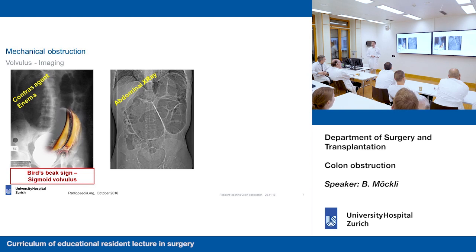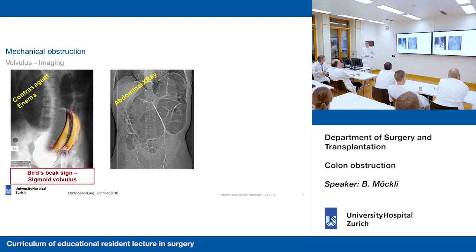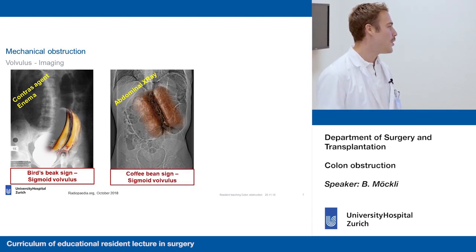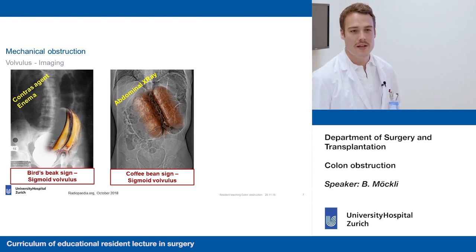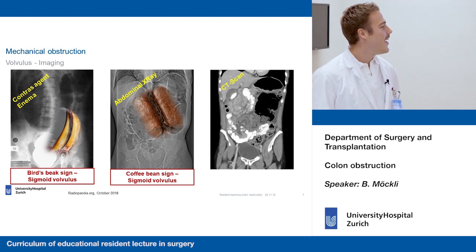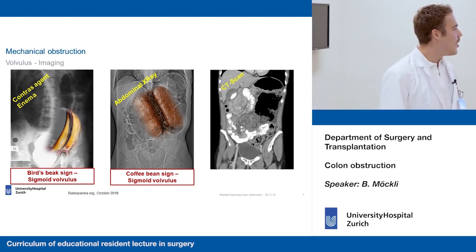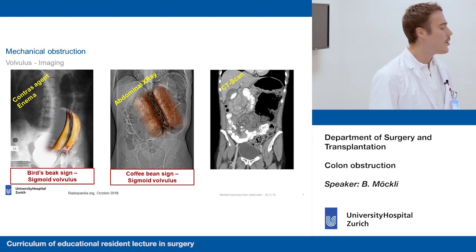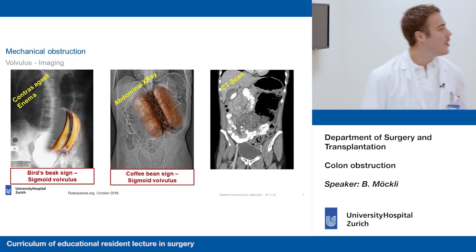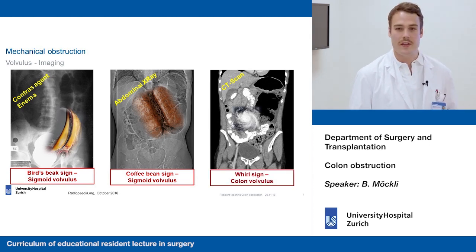Next we have this abdominal radiograph — a very typical sign as well. Anyone have an idea? A coffee bean sign — exactly. That's typical for sigmoid volvulus but can also be for cecal volvulus. And then this structure here of the twisted mesenterium, which is typical for any kind of colonic volvulus — it can be sigmoid or cecal — and that's a whirl sign, also very typical.